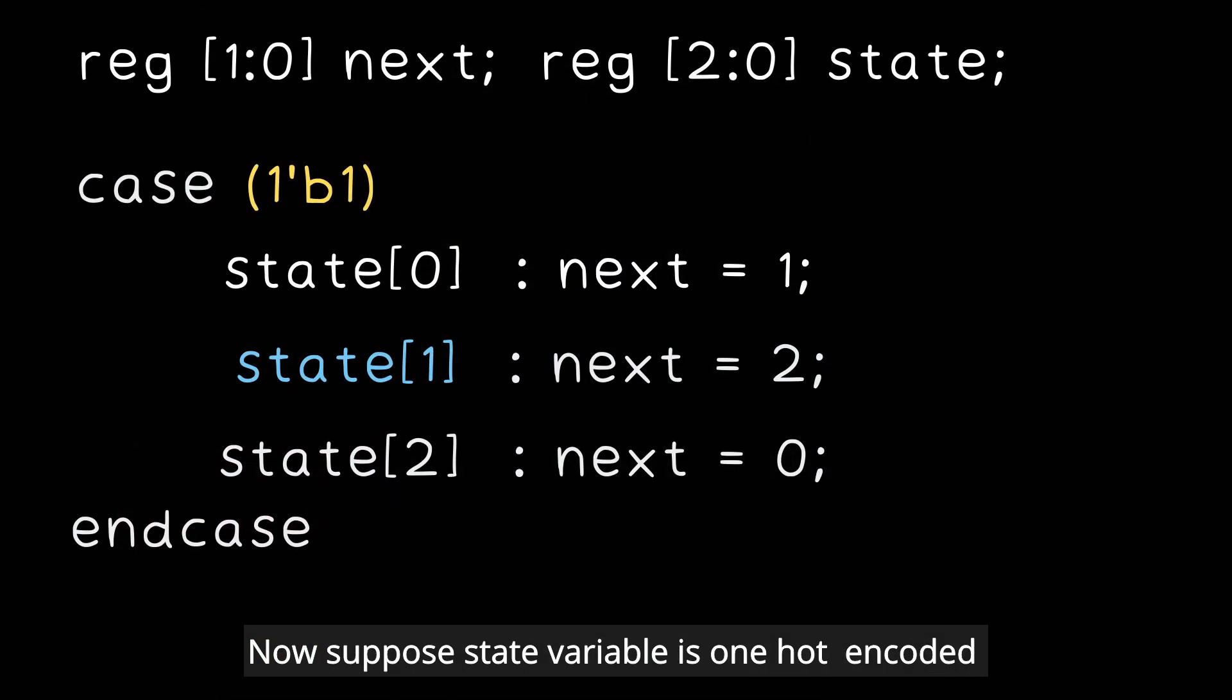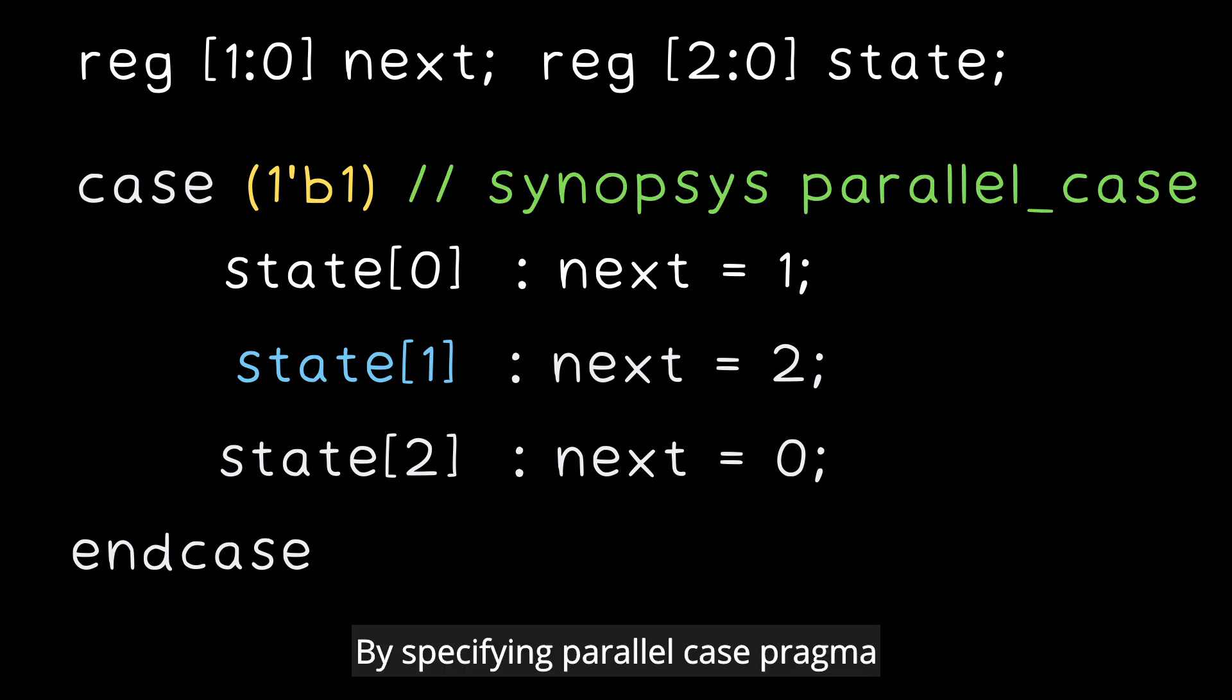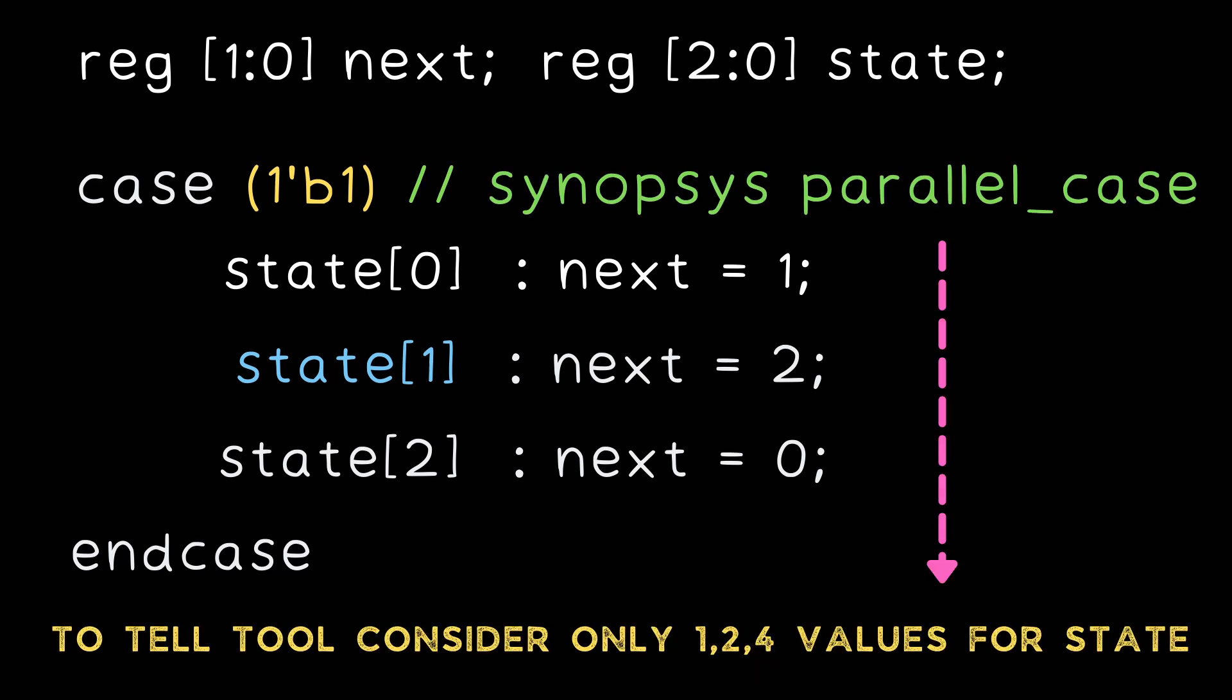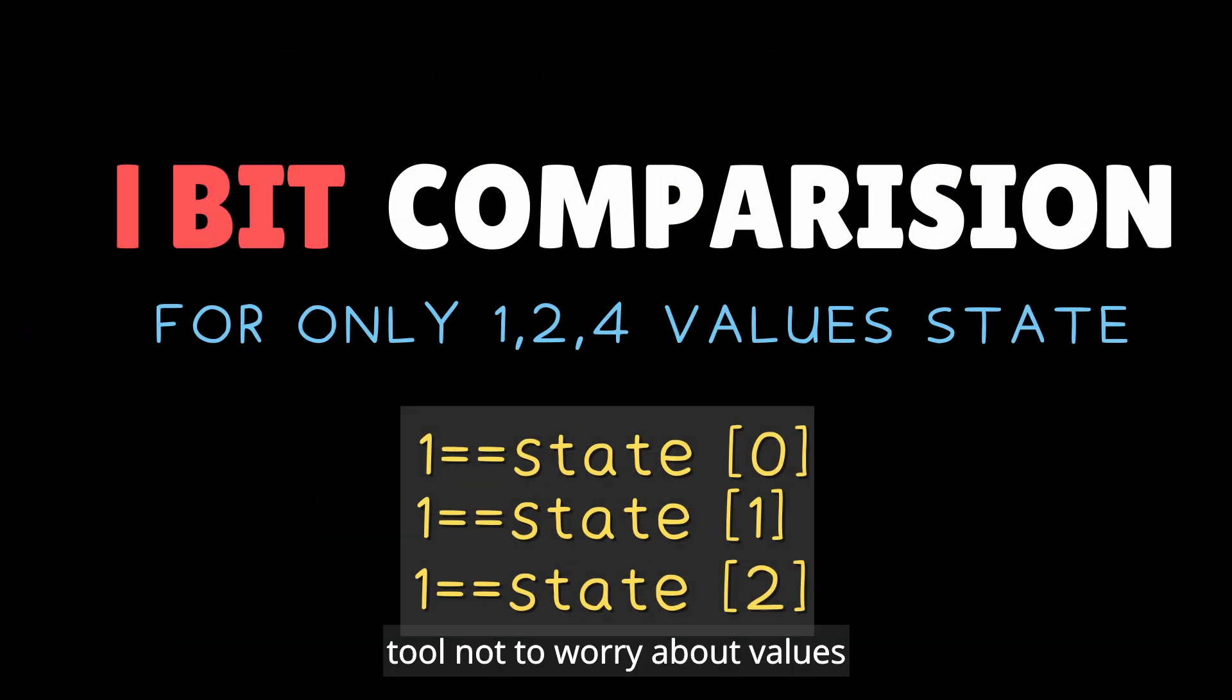Now suppose the state variable is one hot encoded, we can further optimize the design by specifying a parallel case pragma which will tell the synthesis tool not to worry about the values which are not one hot encoded, that is 0, 3, 5, 6, and 7.